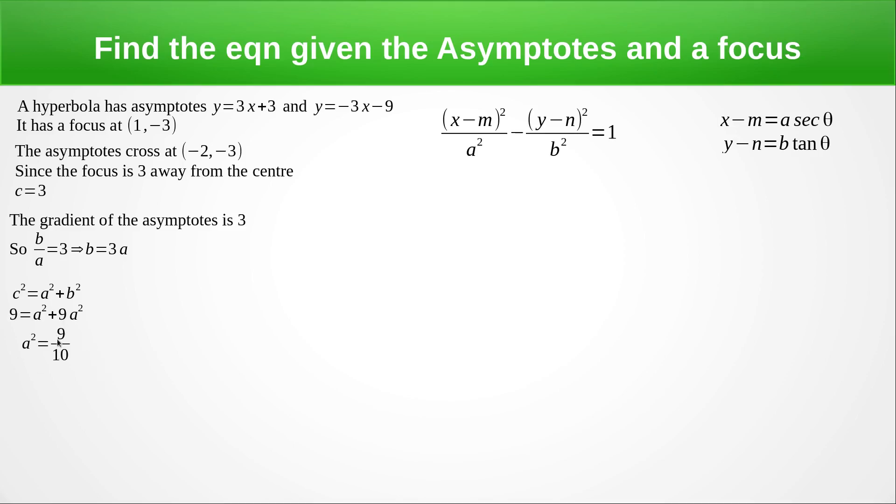Rearranging this, we end up with a squared equals 9 over 10. And obviously, b squared is going to be 9a squared, so we're going to get 81 over 10.